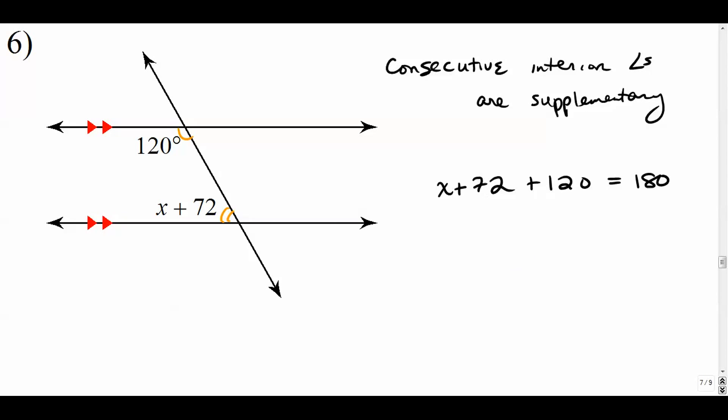Combine these like terms. We get x plus 192 equals 180 and we'll subtract 192 from both sides to get negative 12. Totally fine to get a negative x value because when you plug that back in here, when you plug it back in for x, negative 12 plus 72, well, that's equal to 60. And as we know, 60 plus 120 is 180. So that works.